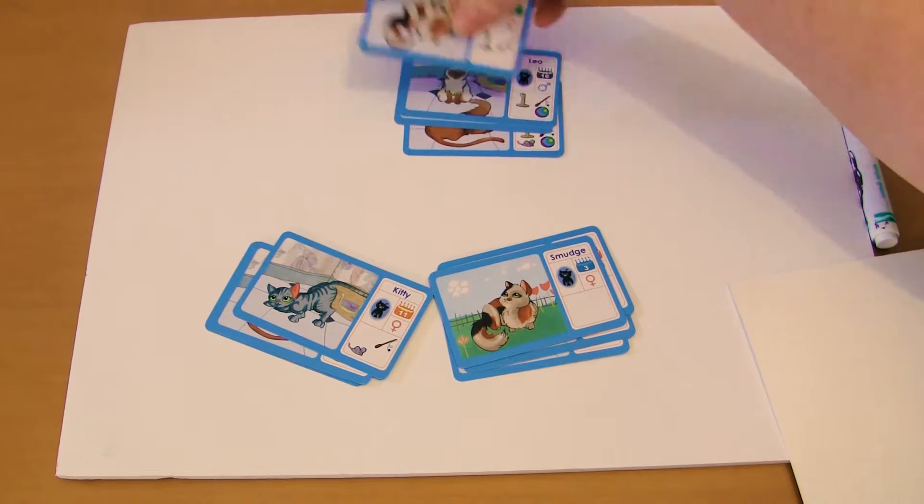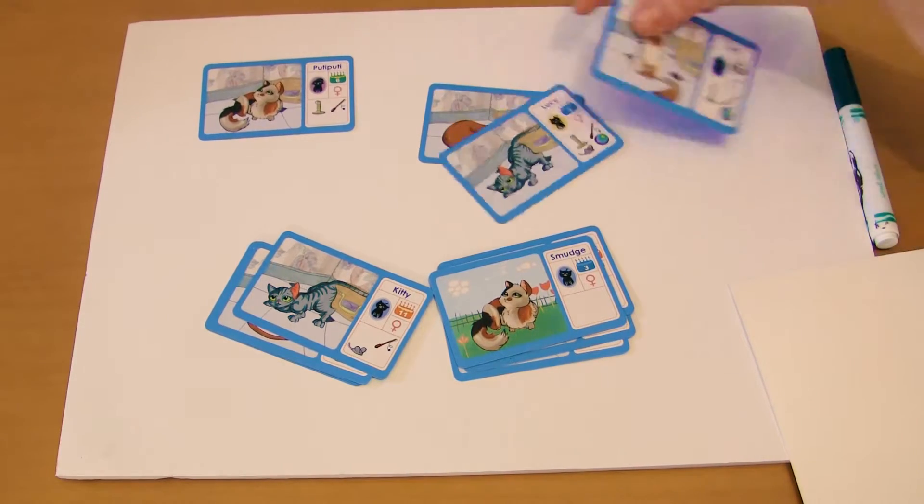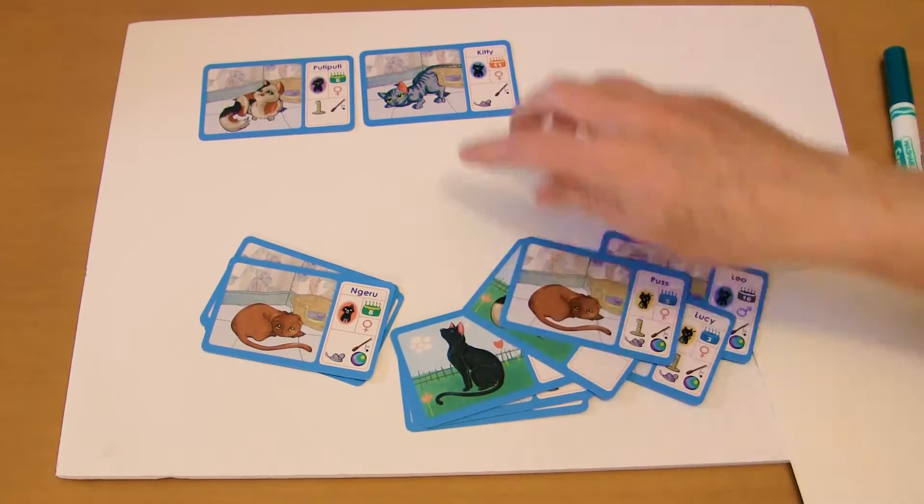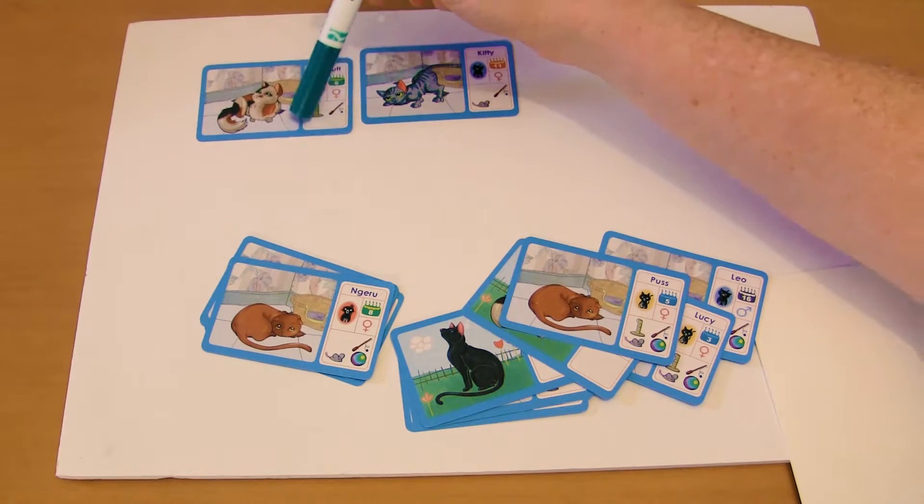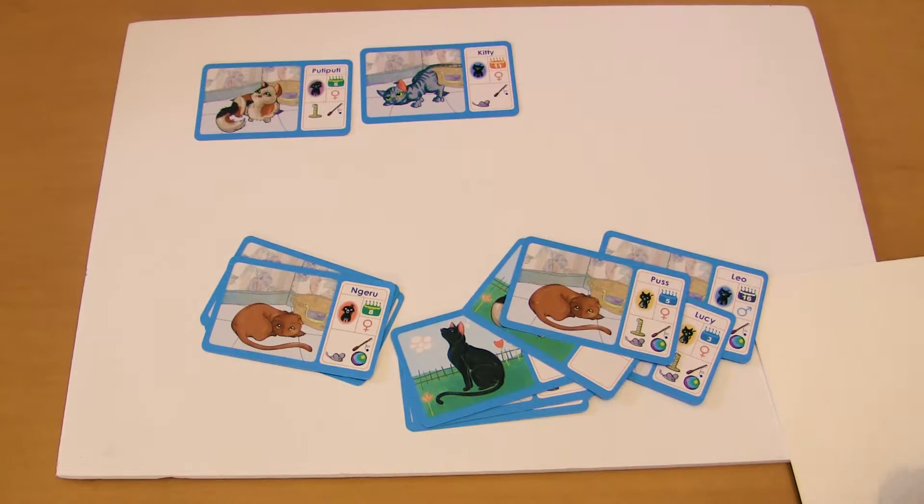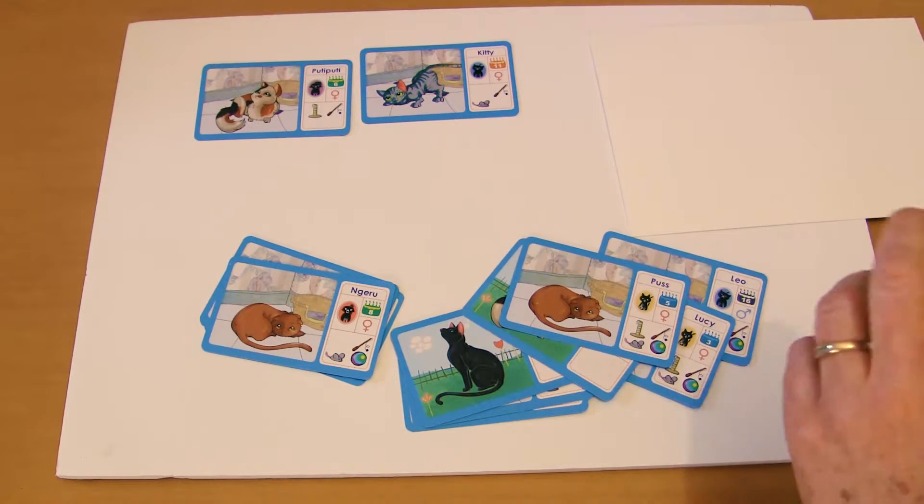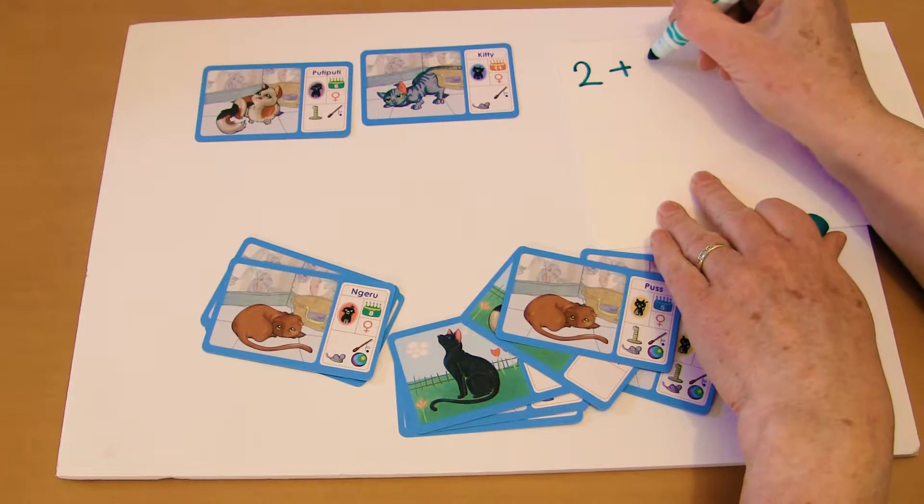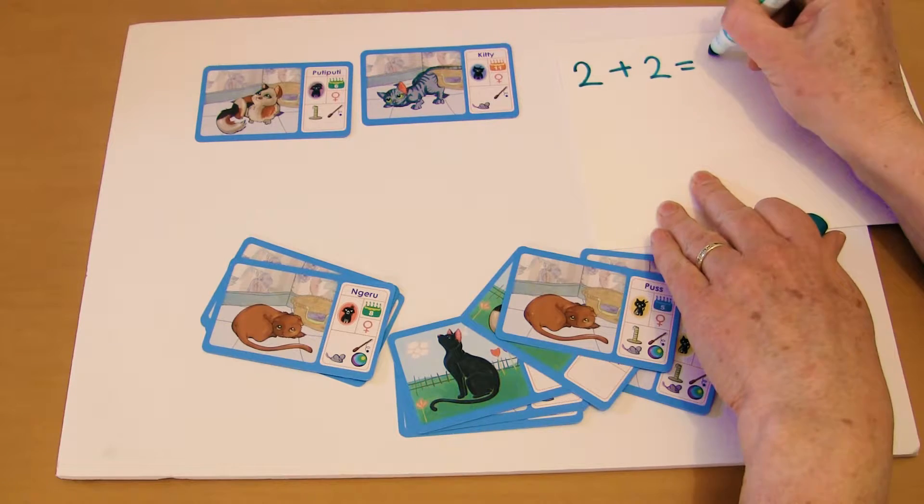So this person might go, I've got this one, oh that's not going to work. Here we are, these two here, so I've got Putty Putty and Kitty. I've got two, one, two, three, four toys. And then they write it down as a mathematical expression, so they would write 2 plus 2 equals 4.